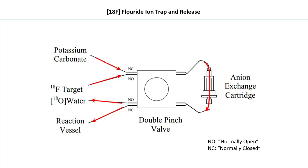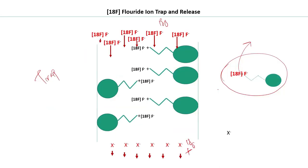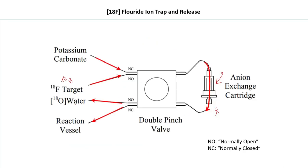Looking at the hardware: the F-18 in O-18 water from the target passes through a normally closed pathway into the anion exchange cartridge, where all F-18 ions are trapped. The output at this stage yields O-18 water and counter-ion X. Next, a normally closed channel is opened and potassium carbonate solution is passed through, releasing the trapped F-18. In the reaction vessel, we collect F-18 fluoride ion with potassium as the counter-ion, since potassium carbonate was used — the carbonate binds to the bead and potassium becomes the counter-ion for fluorine.